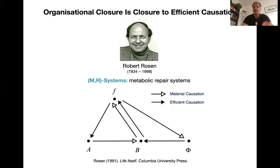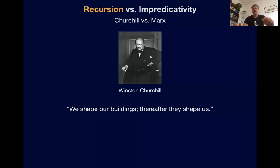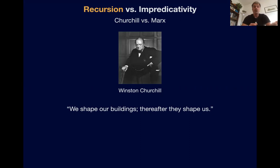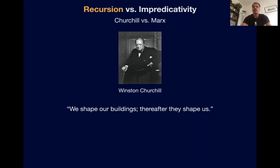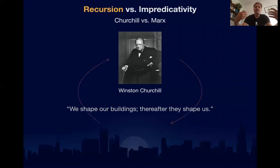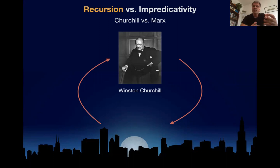Dennis Walsh's book on organisms and agency provides a memorable example of the difference between recursion and impredicativity, which affects Rosen's diagram. Recursion can be illustrated with Churchill's quote: 'We shape our buildings; thereafter they shape us.' You and the building exist independently but influence each other through reciprocal causal feedback — iterating this gives a recursive cultural evolution. This is reciprocal causation: two independently existing things that influence each other.